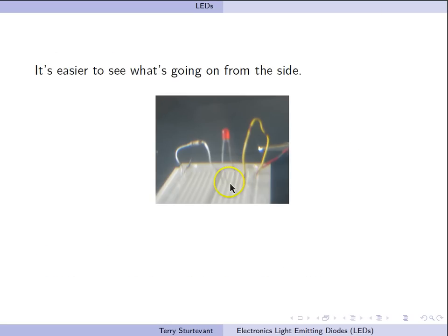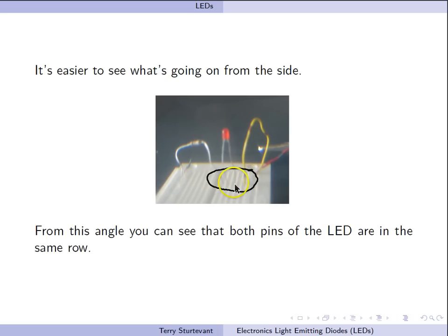Here we see the two pins to the LED are in the same row. So what this means is the current won't actually flow through the LED any time. The current will always flow directly from here.